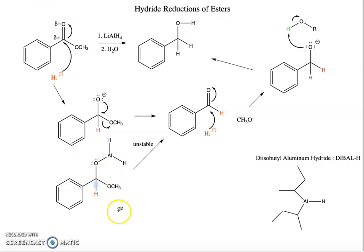Since it's unstable, it breaks down pretty quickly to our aldehyde, which can then be attacked by another hydride and finish the reaction as an alcohol.